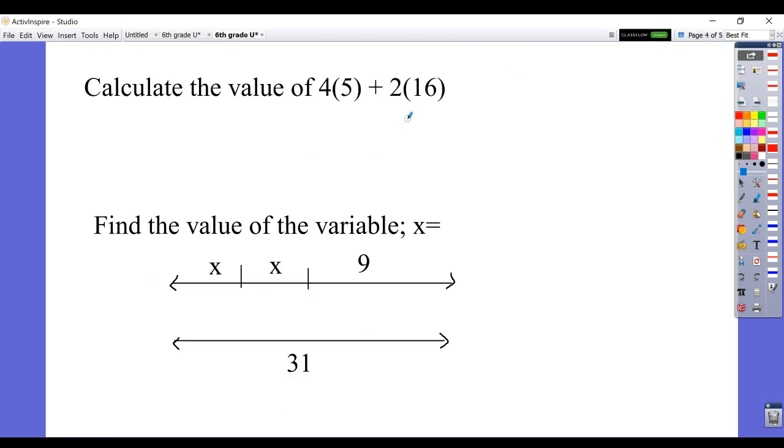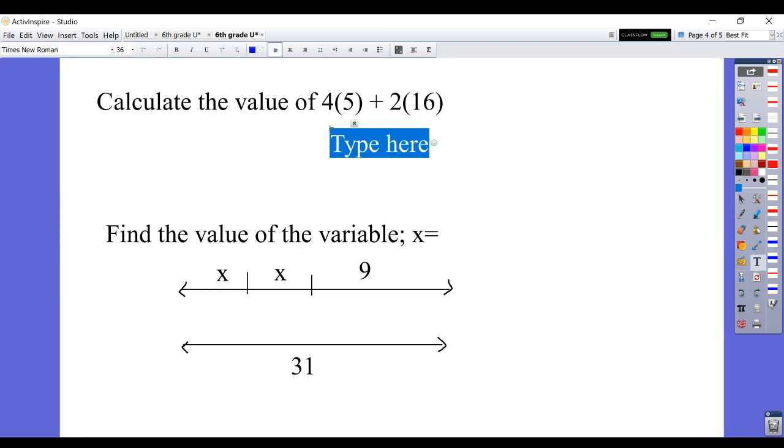Calculate the value of 4 times 5 plus 2 times 16. Again, even if it doesn't say order of operations, we know that we need to do so. 4 times 5 is 20. 2 times 16 is 32. And then our addition would be last, 52.